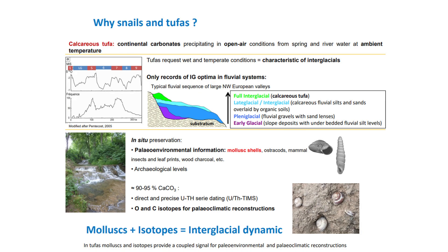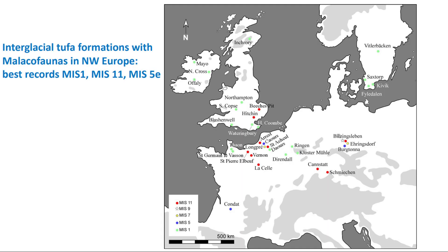This is the work of Julie Berkowski, my professor. Using tufas, amino acids, and isotopes, we can provide a reconstruction of the interglacial dynamic from all approaches. If you consider all the tufas that have been studied for malacology, they are quite numerous, but not distributed equally across all periods. The best records are for Stage 1, Stage 11, and Stage 5e onwards. Among those, Stage 11 is the best documented.